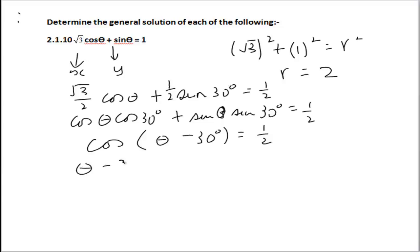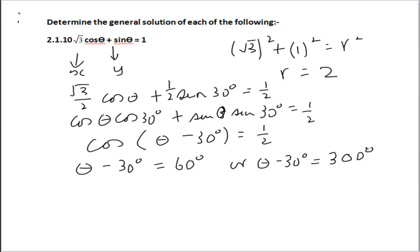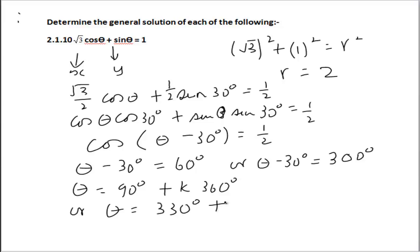So θ - 30° = 60°. In which other quadrant is cosine positive? The fourth quadrant, so 360° - 60° = 300°. Therefore θ = 90° + k·360°, or θ = 330° + k·360°.